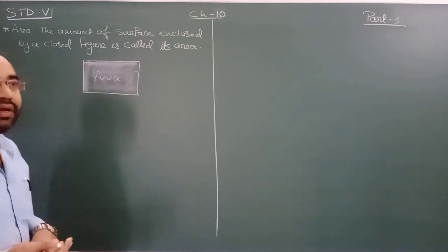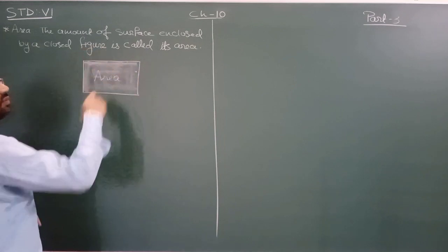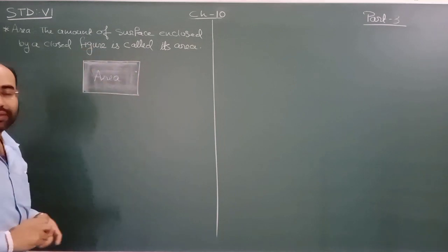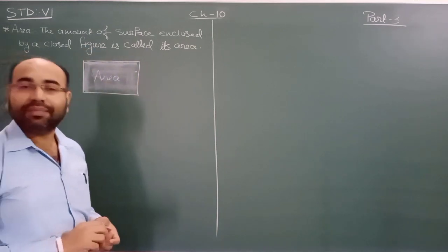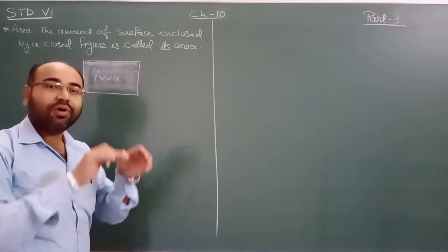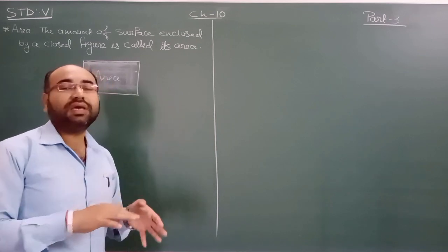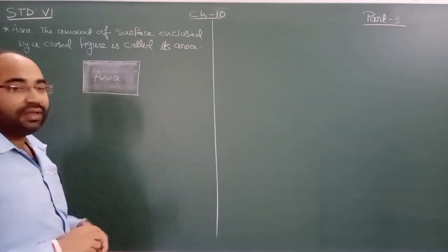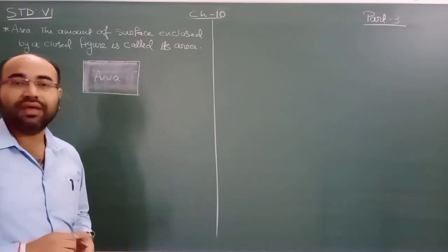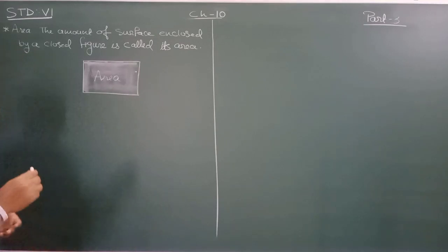Perimeter we have studied — when we add the boundary or the sum of sides, then we get the perimeter. The space enclosed inside will be called the area of that figure. So let us begin with the two formulas.